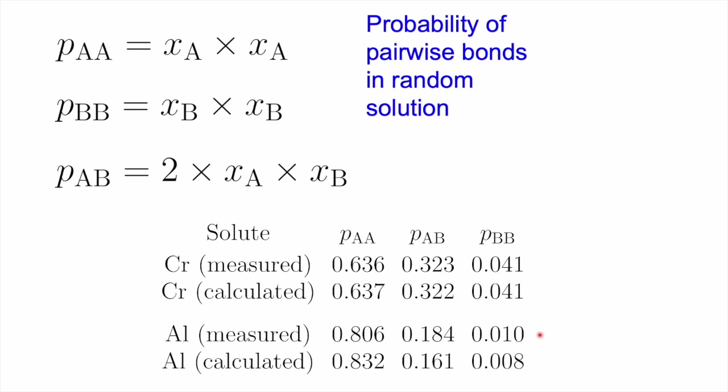Another way of looking at the same data is to find the probability of getting an A atom which has a neighboring A atom. The probability of finding an A atom is simply its concentration X_A, and the probability of finding another A atom next to it is X_A × X_A. Similarly for B atoms. For AB, we multiply by 2 because we can also get BA. These calculations show good agreement between the randomly calculated probability and the actual measured probability, so we can truly conclude that the solution obtained by mechanical alloying is actually a random mixture of atoms. This is a nice application of simple thermodynamic theory which has consequences on the mechanical properties of the material produced.